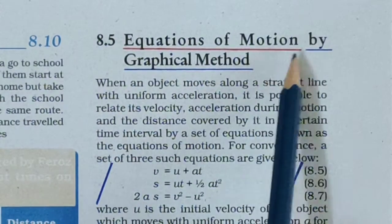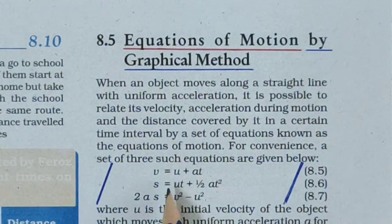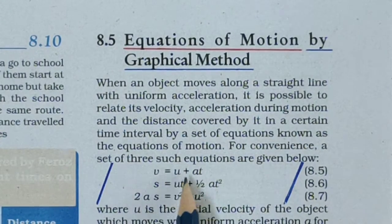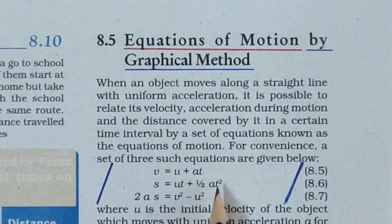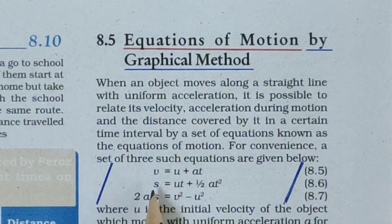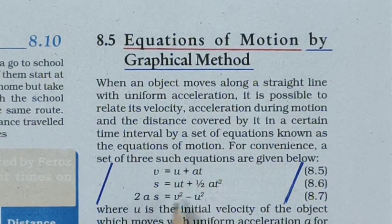Equations of motion by graphical method. There are three equations: v = u + at; s = ut + ½at²; and 2as = v² − u². These are the three important equations used in motion calculations of velocity, distance travelled, time taken, or acceleration.